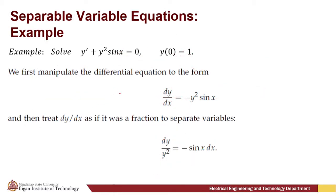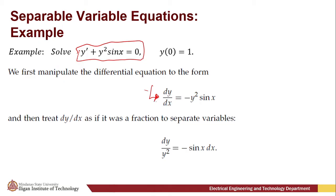So how are we going to find the solution of a separable variable equation? In this example, we're going to solve the differential equation y' + y² sin x = 0 with initial condition y(0) = 1. First, we manipulate the differential equation to its standard form so that it is easy to separate the variables. We transform it to: dy/dx = −y² sin x.